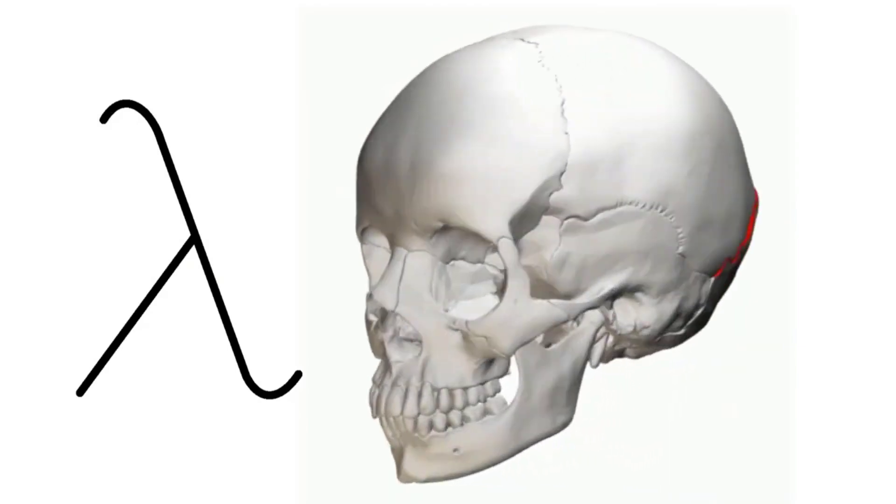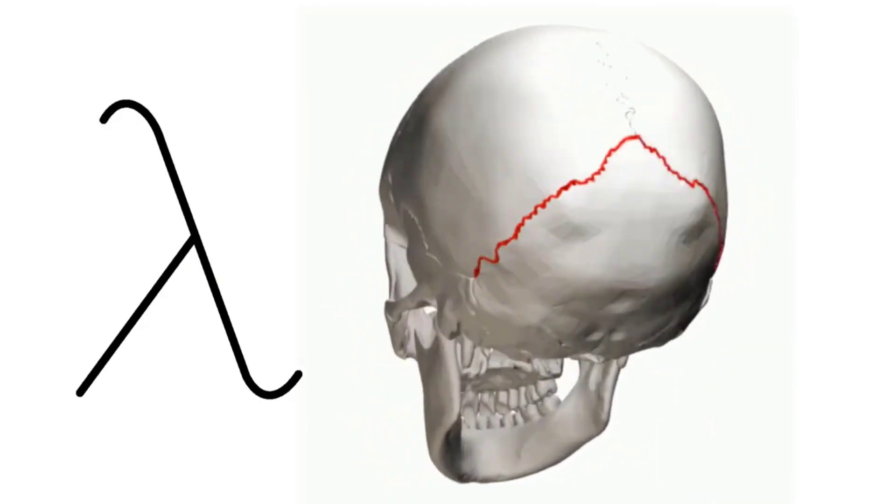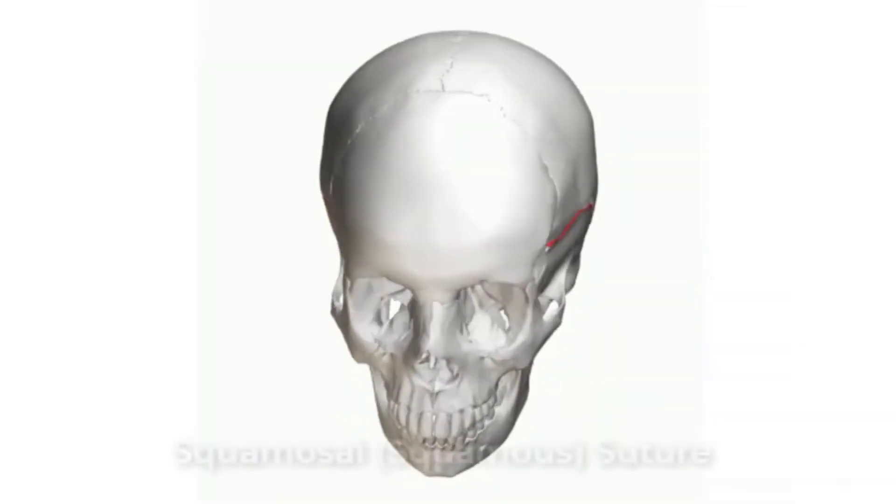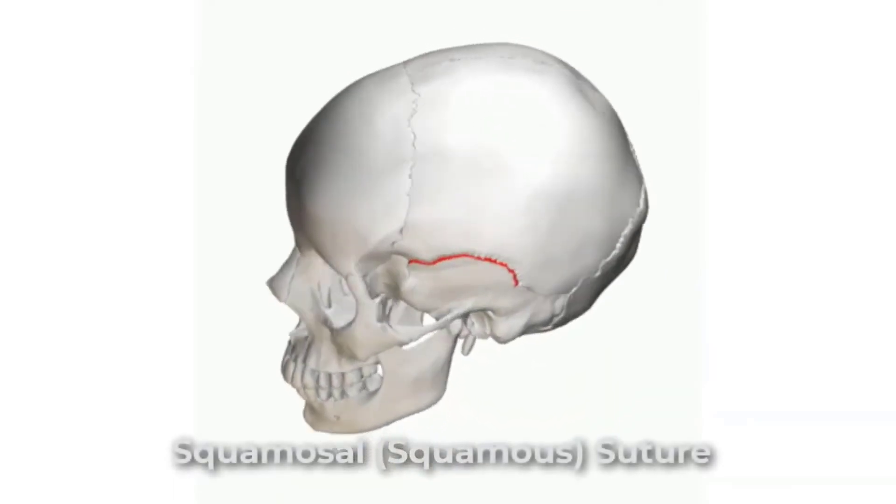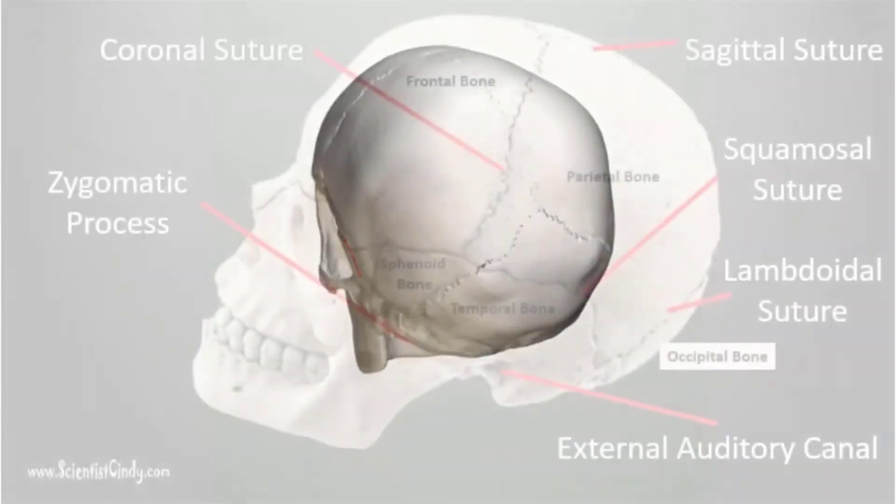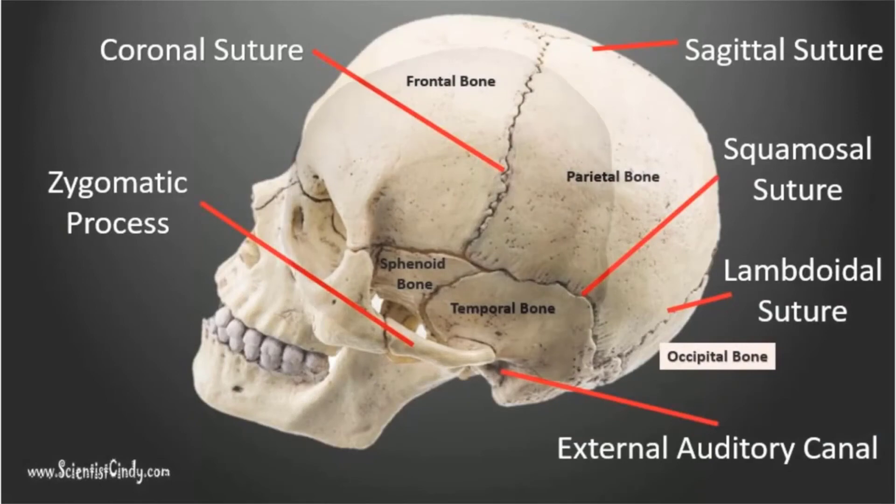The squamosal suture is located on the lateral skull. It unites the squamous portion of the temporal bone with the parietal bone.